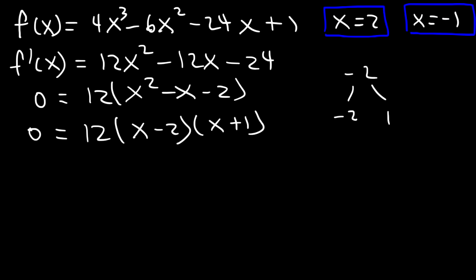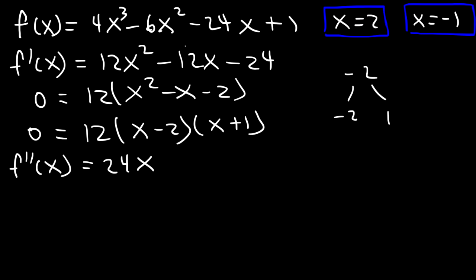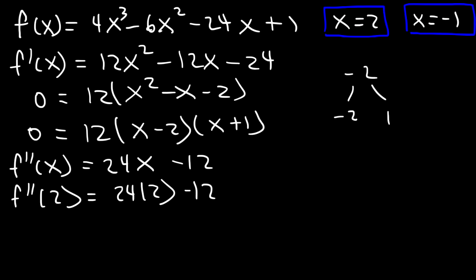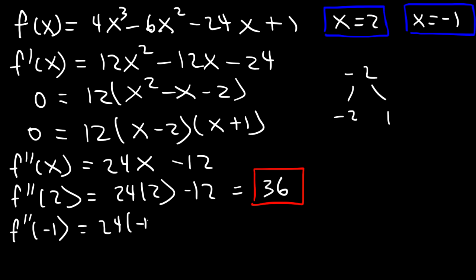Now that we have the critical numbers, let's determine the sign of the second derivative at those points. The second derivative is 24x - 12. Evaluating at x = 2: 24(2) - 12 = 48 - 12 = 36, which is positive. Evaluating at x = -1: 24(-1) - 12 = -24 - 12 = -36, which is negative.